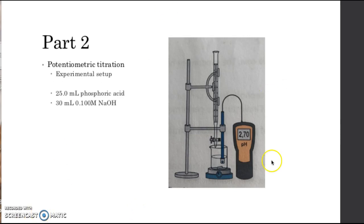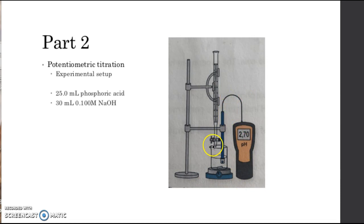In part 2 we are doing a potentiometric titration. The experimental setup is the same throughout this experiment and all these titrations. The difference in this part is that we have a pH meter. We have a beaker with 25 milliliters of phosphoric acid and a burette filled with 25 milliliters of sodium hydroxide. The pH meter is here to measure the pH value throughout the titration to see when it rises and what happens.